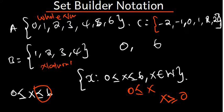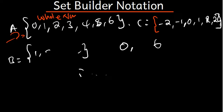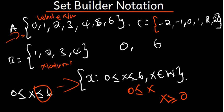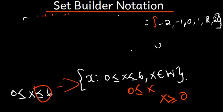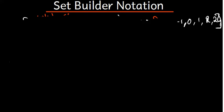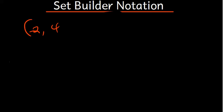Set builder notation can also help us list elements. There is a relationship between set builder notation and set interval notation. When talking about interval notation, we're talking about a range of values — for example, from negative two to four, where both negative two and four are not included.